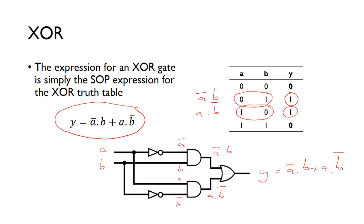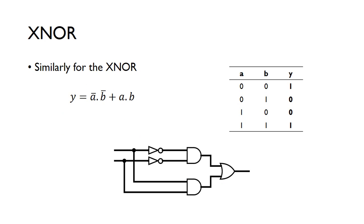So using the SOP expression for an XOR gate essentially gives us the circuit implementation for an XOR gate. We'll just do the same for XNOR.